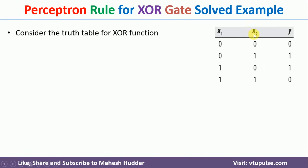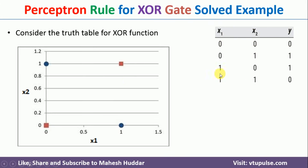X1 and X2 are the two inputs and Y is the output. The output is low only when both the inputs are low or both of them are high. If both of them are low or high, the output is 0. If either of them is high, the output is high.